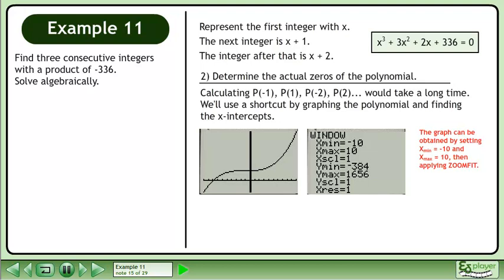The graph can be obtained by setting xmin equal to negative 10 and xmax equal to 10, then applying zoom fit. Use the zero feature of the graphing calculator to get the x-intercept, negative 8.